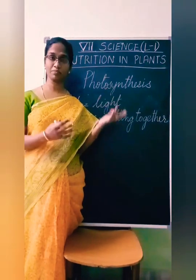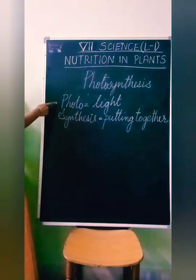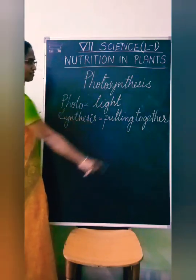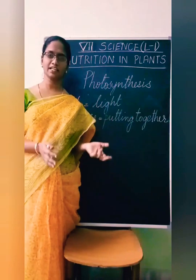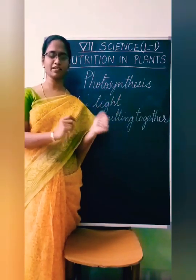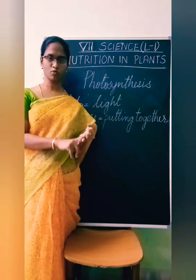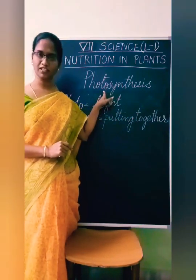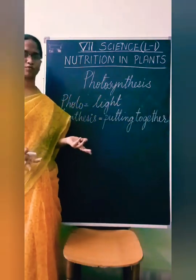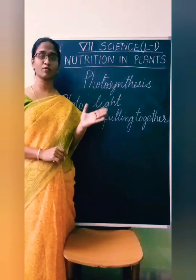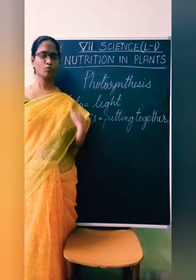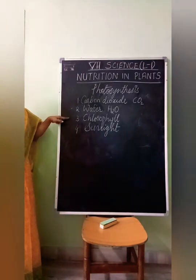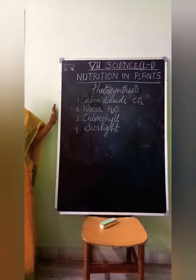Now, what is the meaning of photosynthesis? The word 'photo' means light, and 'synthesis' means putting together. Photosynthesis is a process where green plants put together all the inorganic matter like carbon dioxide and water with the help of sunlight, and they prepare organic food. In photosynthesis, we require four things: carbon dioxide, water, chlorophyll, and sunlight.